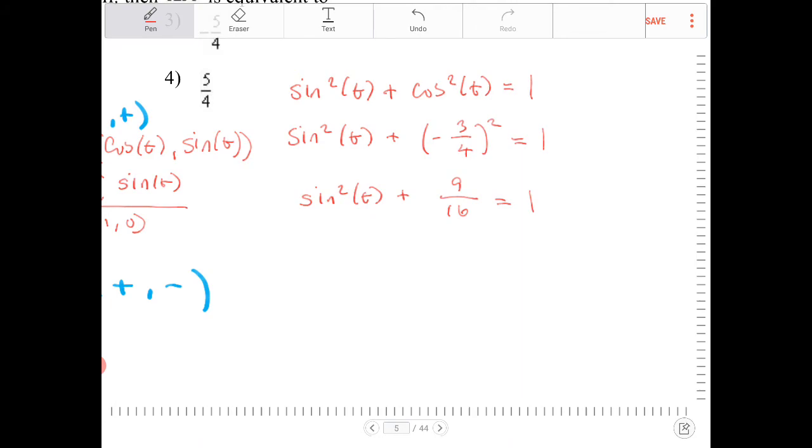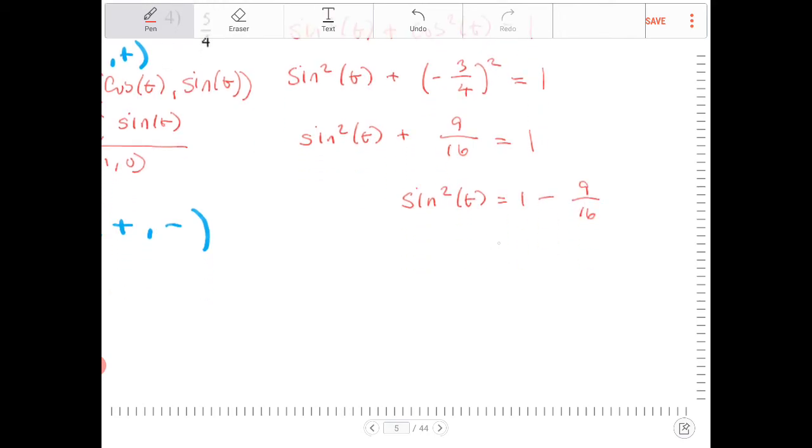Subtract both sides by nine-sixteenths. I get sine squared theta equals 1 minus nine-sixteenths. Creating a common denominator, sixteen-sixteenths minus nine-sixteenths equals seven-sixteenths, which equals sine squared theta.